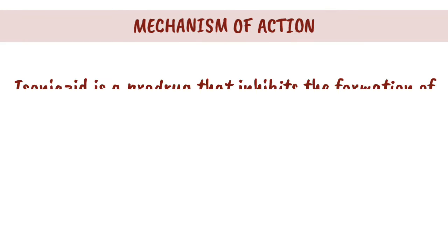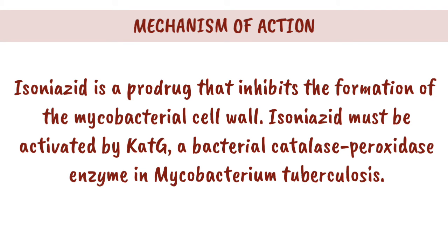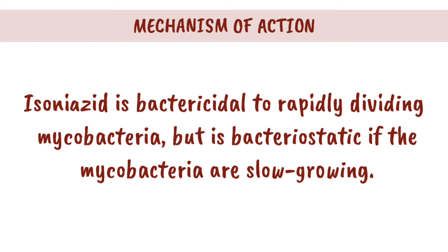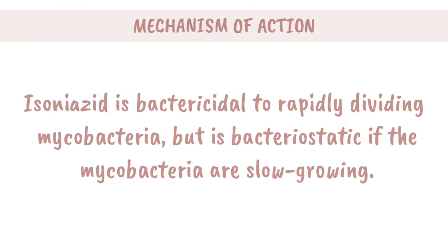Mechanism of Action: Isoniazid is a prodrug that inhibits the formation of the mycobacterial cell wall. It must be activated by KatG, a bacterial catalase-peroxidase enzyme in Mycobacterium tuberculosis. Isoniazid is bactericidal to rapidly dividing mycobacteria, but is bacteriostatic if the mycobacteria are slow-growing.